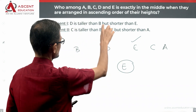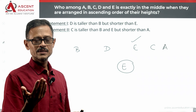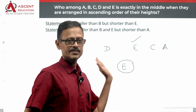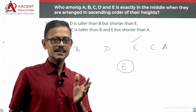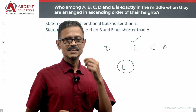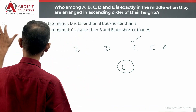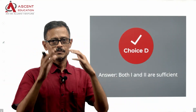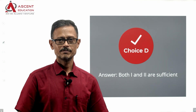Quickly running through once more: Statement 1 places D between B and E. Statement 2 requires C to be to the right of both B and D, and to the left of A. Combining both, E is conclusively in the middle position. Together the statements give a unique answer. Therefore, the correct answer is choice D — Statements 1 and 2 together are sufficient.